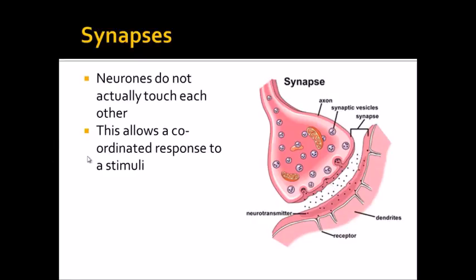This allows a coordinated response to a stimulus. If we use the example of you doing a bicep curl, so you bring your arm from a right angle position up towards your shoulder, essentially you only want certain muscle fibers contracting, the muscle fibers that are going to bring your arm upwards.